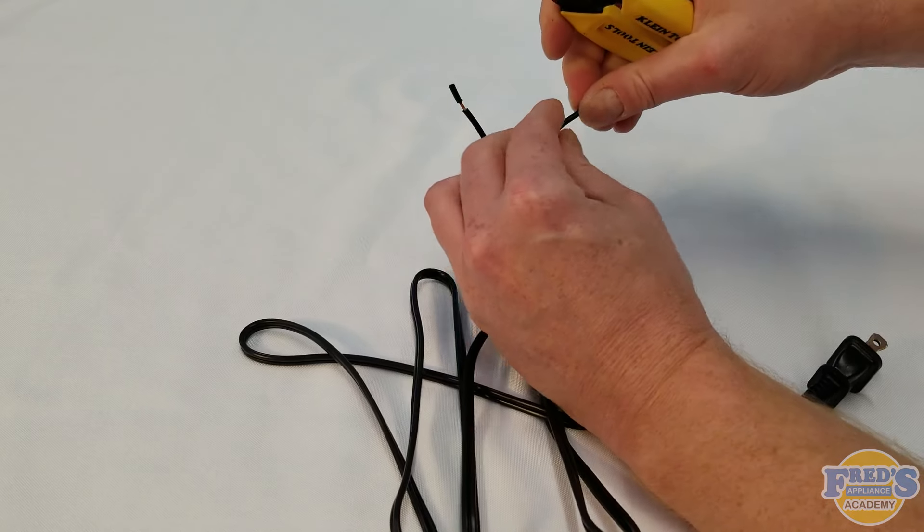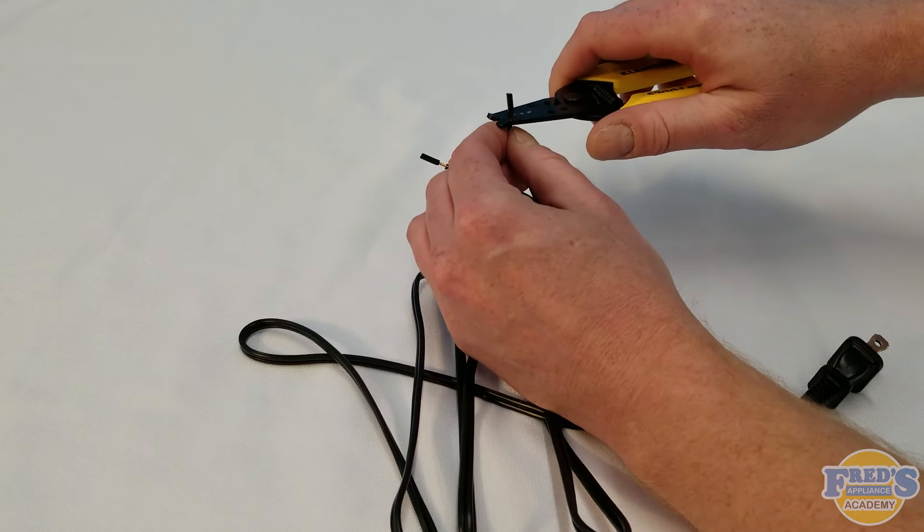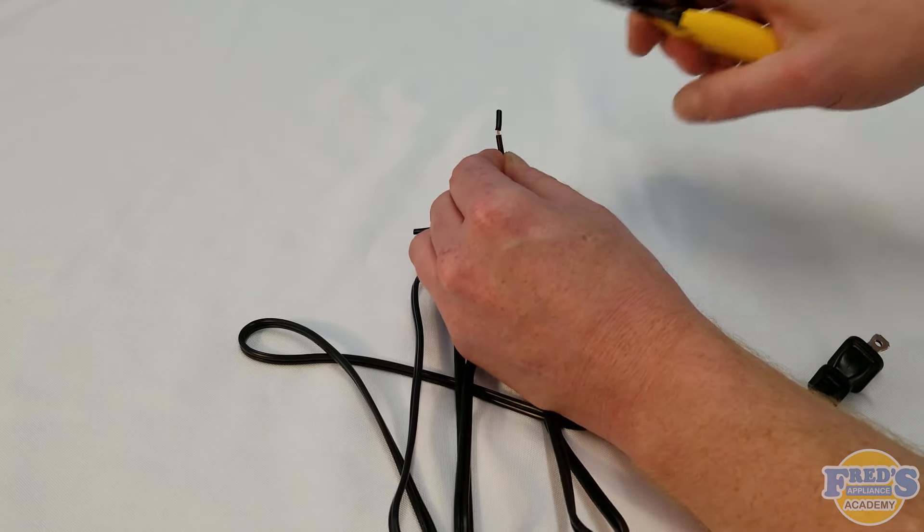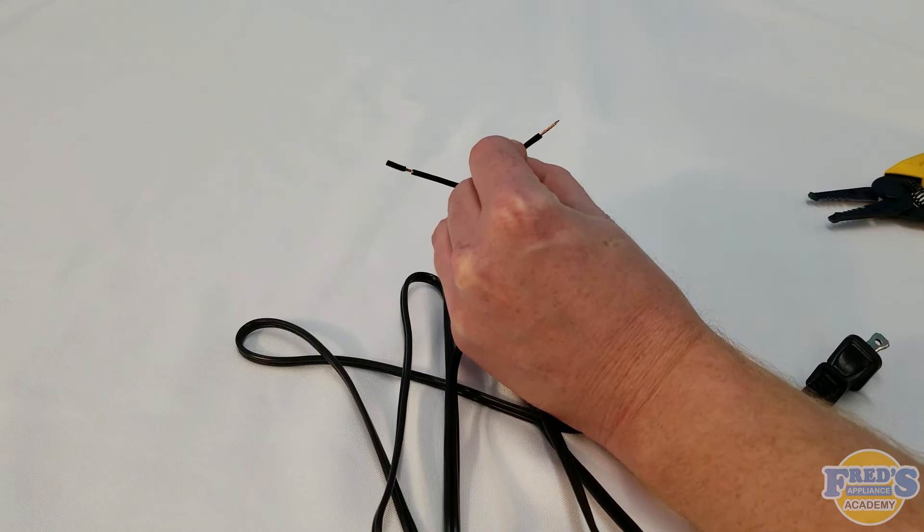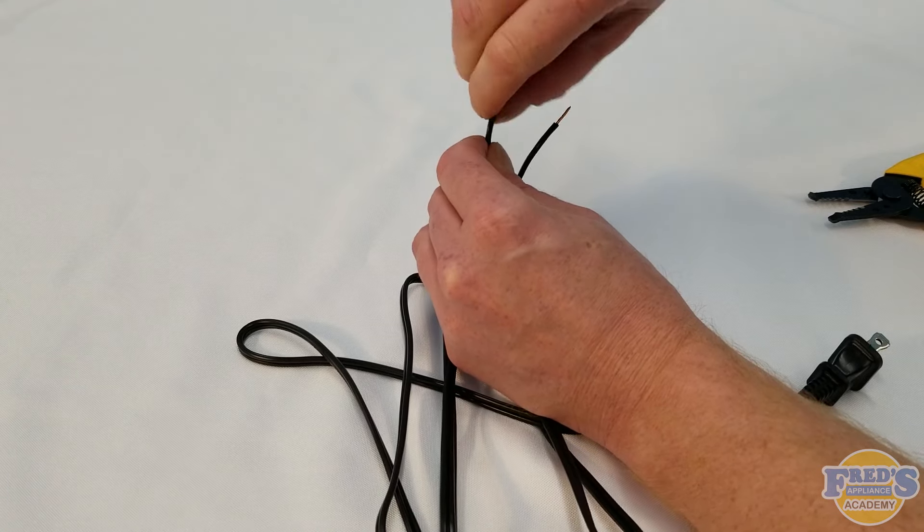To remove this insulation, I prefer to twist it as opposed to using the tool itself. It just helps to keep the copper together a little bit better and keep the strands of copper tightly twisted.